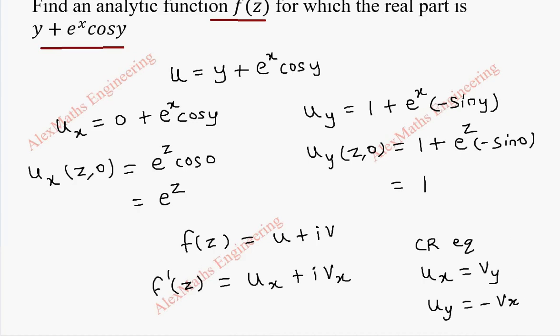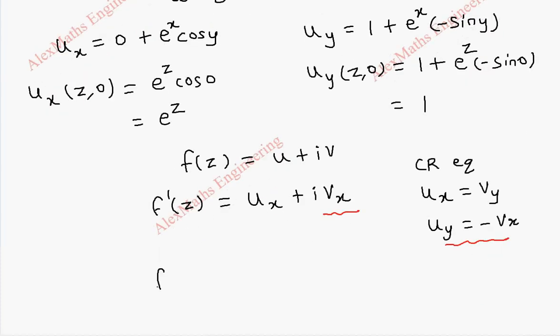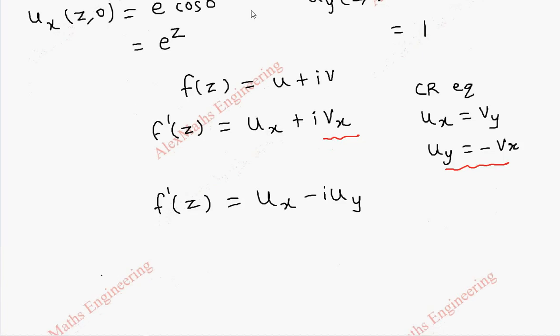Using this, v_x can be replaced as -u_y, so we get f'(z) = u_x - iu_y.